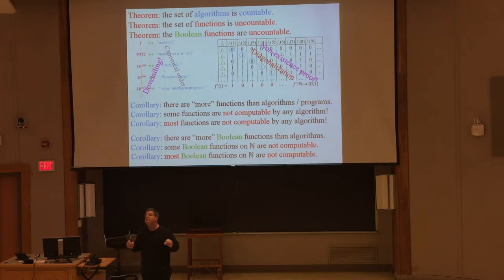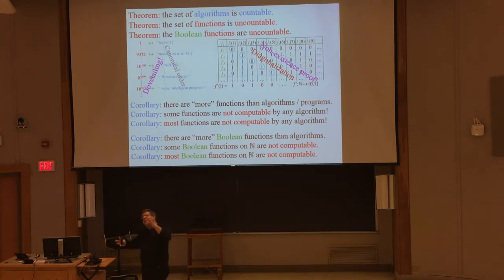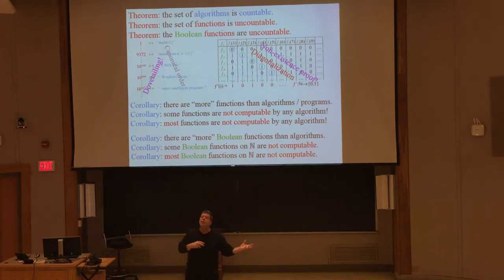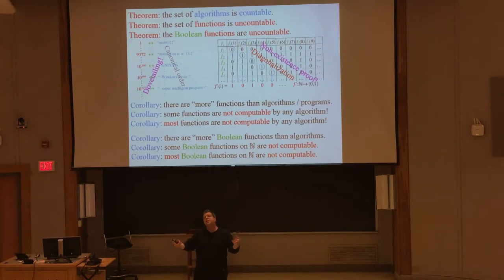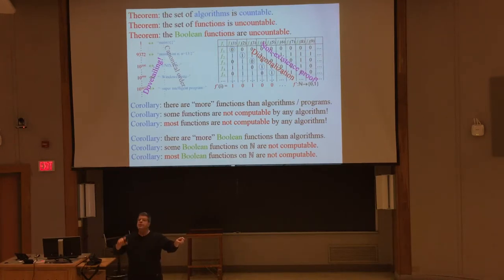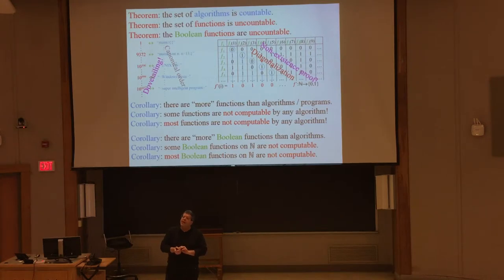Things of different types cannot be equal to each other — like a zebra and a mineral. Even if a rock looks exactly like a zebra, it's still not a zebra because one is an animal and one is a mineral. Same thing for algorithms and functions: a function is a mathematical mapping from a domain to a range; an algorithm is a string representing a piece of code, a set of instructions, or a recipe — every recipe in your kitchen is an algorithm. One can implement the other, but they're not the same type of object.